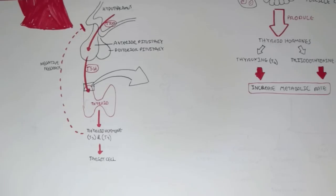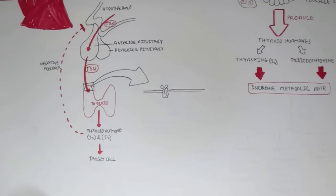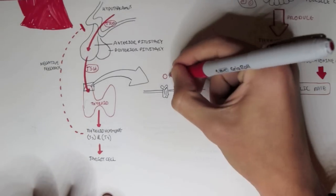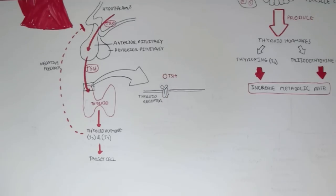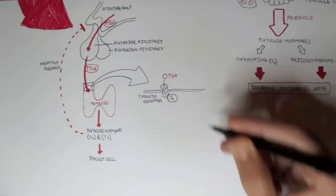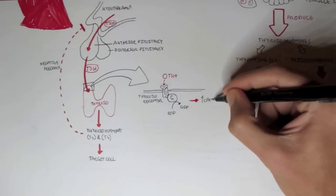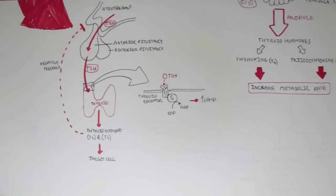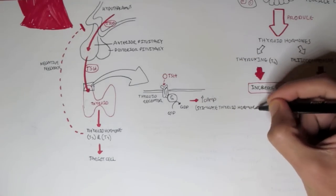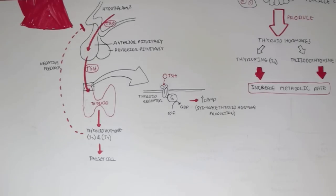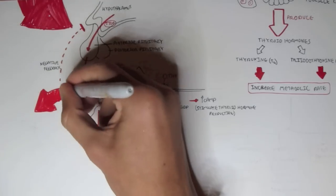How does thyroid-stimulating hormone stimulate thyroid hormone production? If we zoom in here we see the membrane of the thyroid and a G protein-coupled receptor, which gets activated once bound to TSH. GDP is exchanged for GTP, which essentially increases cellular cyclic AMP levels, which in turn increases the production of thyroid hormones.